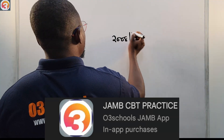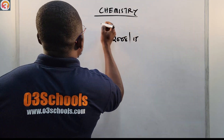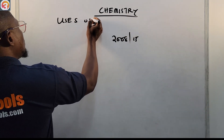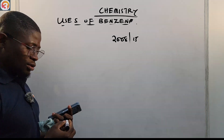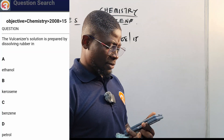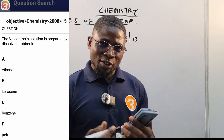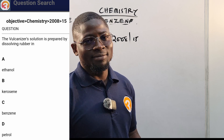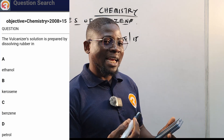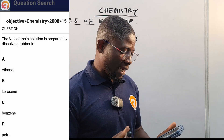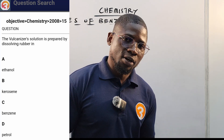2008 question number 15 — chemistry, and today we're looking at the uses of benzene, the concluding part of our study. The question says: 'The vulcanizer solution is prepared by dissolving rubber in...' — essentially asking which of these can dissolve rubber to form a solution. The options are: A) ethanol, B) kerosene, C) benzene, D) petrol.